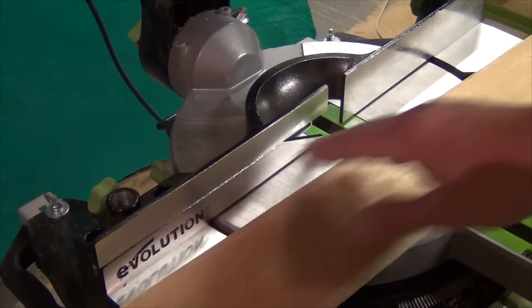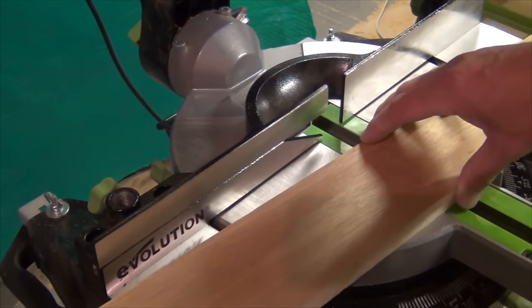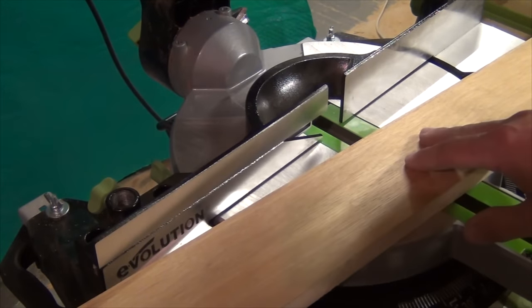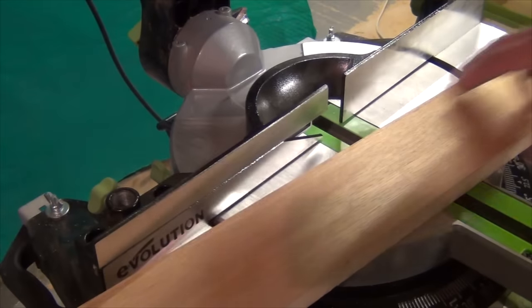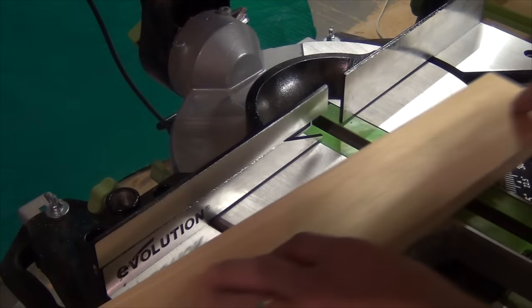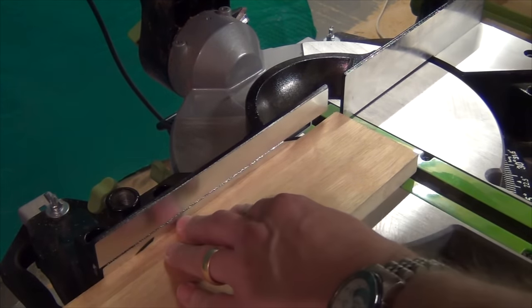To test that the blade is now cutting at 90 degrees to the fence, I've got myself a piece of MDF oak veneer. You could use plywood—something stable is good. Just make sure the edges are parallel. Let's start by just cutting the very end off here and checking that with the try square.